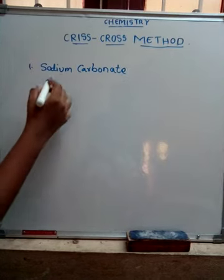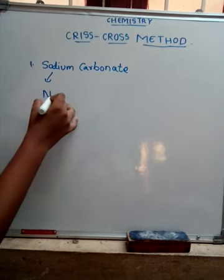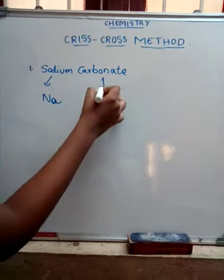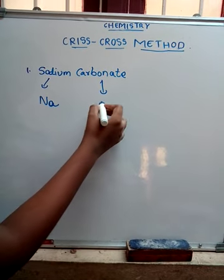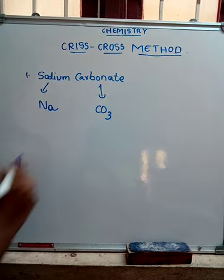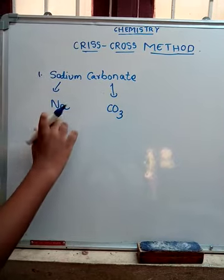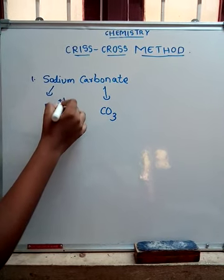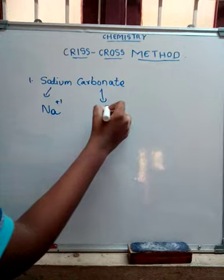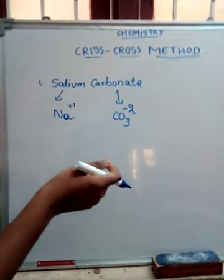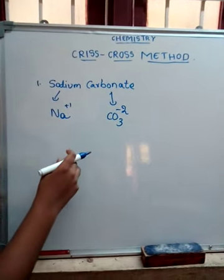First step is sodium. Write the symbol Na. Next, for carbonate, write the symbol CO3. Now, valencies for sodium and carbonate. Sodium has valency plus 1. Carbonate has valency minus 2. I have taught this in the previous video.